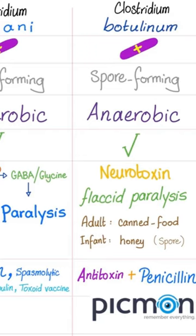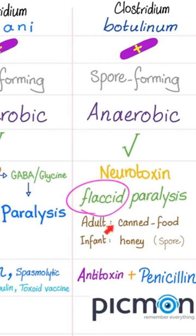Clostridium botulinum produces a neurotoxin causing flaccid paralysis. So tetanii was spastic, but botulinum causes flaccid paralysis. In adults, the source is canned food. In infants, it's honey, because honey contains the spores.